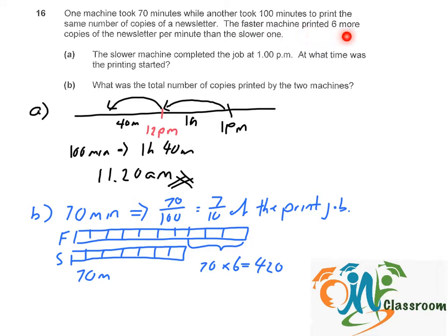So now we know that 3 units equal to 420 copies. So for this, 1 unit will be 420 divided by 3 equals to 140.